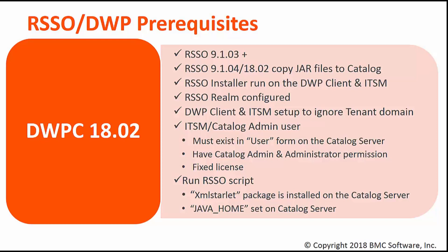The last step is to configure RSSO on the catalog side. Up until recently, this was a very manual process. However, engineering has since provided a script which automates the configuration. Just make sure the XML editor, XML Starlet, is installed and your Java home is set before running it.